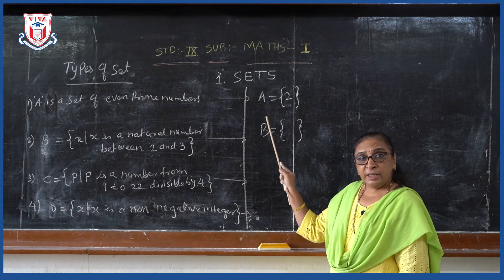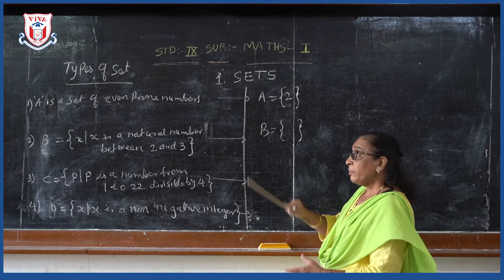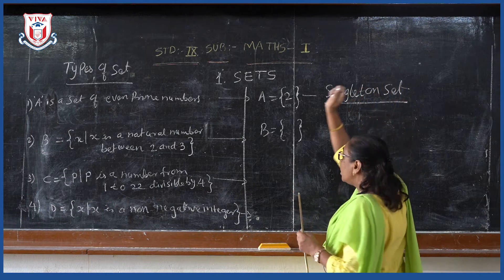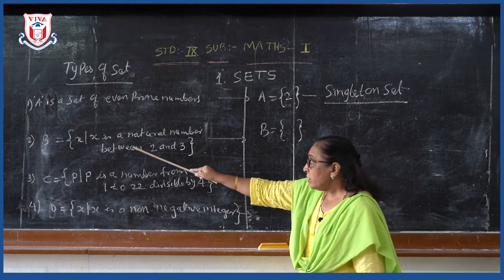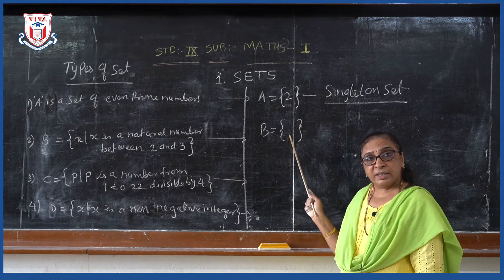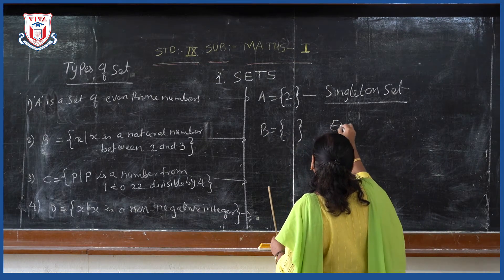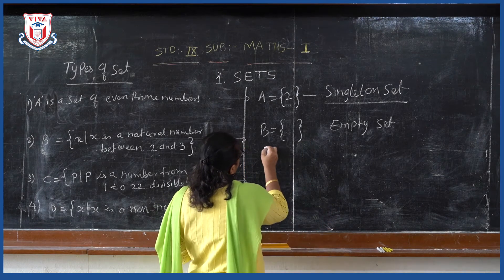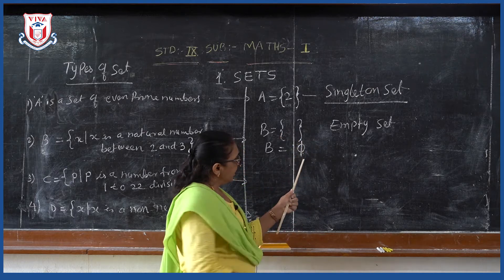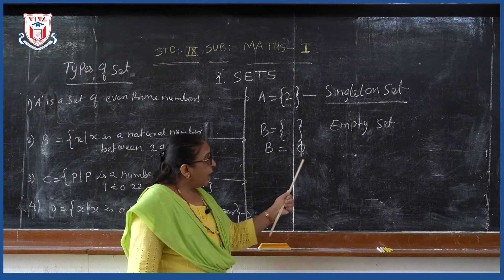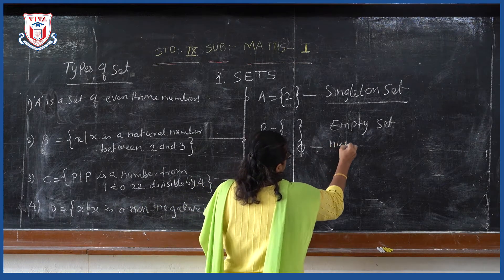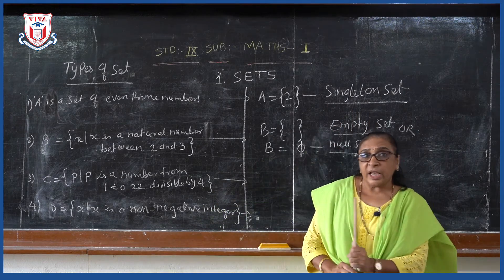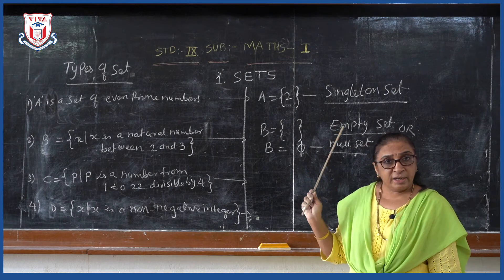If you see these two examples: in set A there is only one element, so such a set is called a singleton set. And in the second one, if you see, there are no elements — that means it is the empty set. The empty set can also be written with the symbol phi, and it is called a null set. So the first type is singleton set, and another is null set.